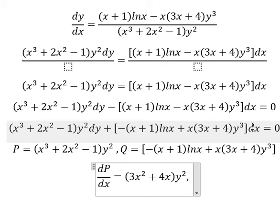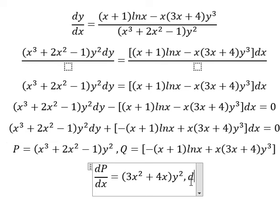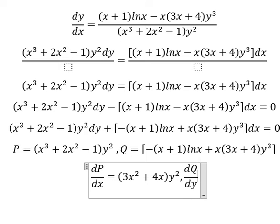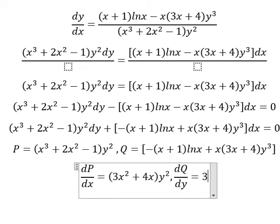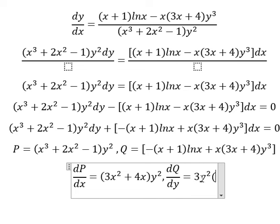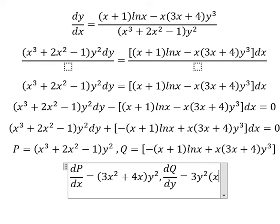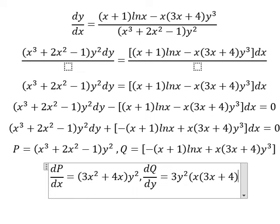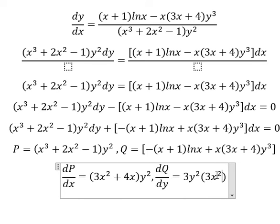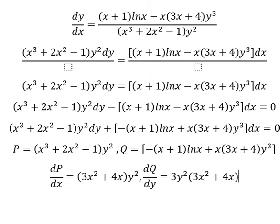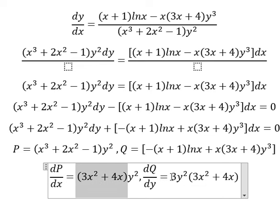Now we have dx, so we need to do the first derivative of q with respect to y. We just have this one here — because this term doesn't have y, the first derivative of that gives zero. Now the first derivative of y to the power of 3 gives about 3y squared, multiplied by x times 3x plus 4. So we get about 3x squared plus 4x. We see that this one is not equal to this one.